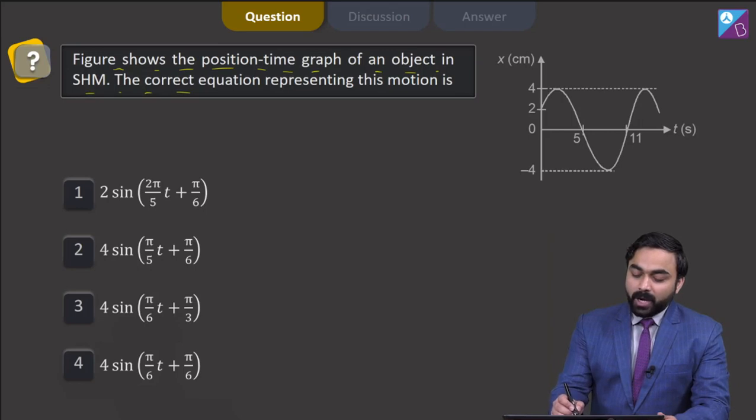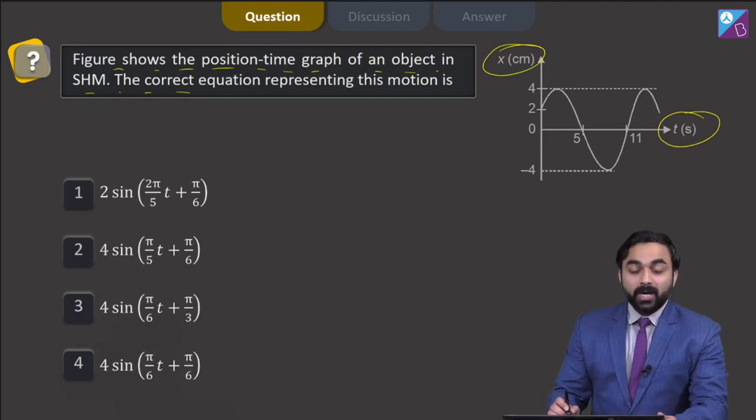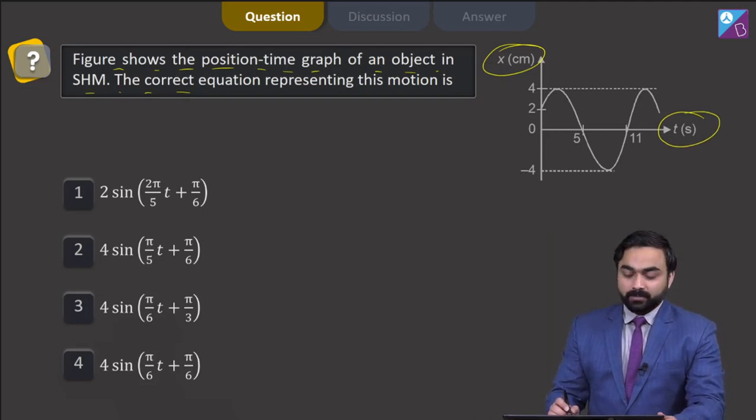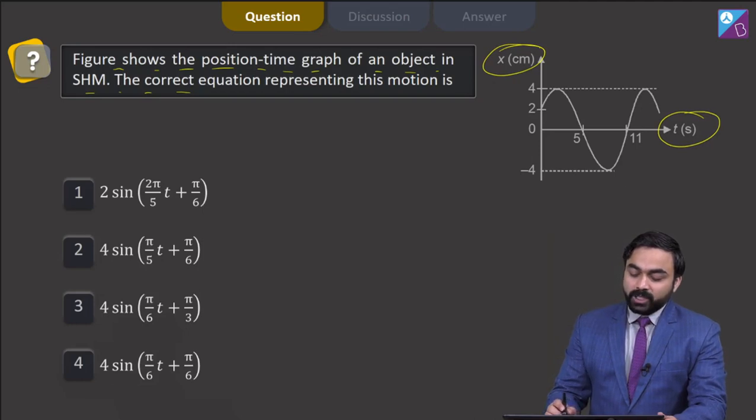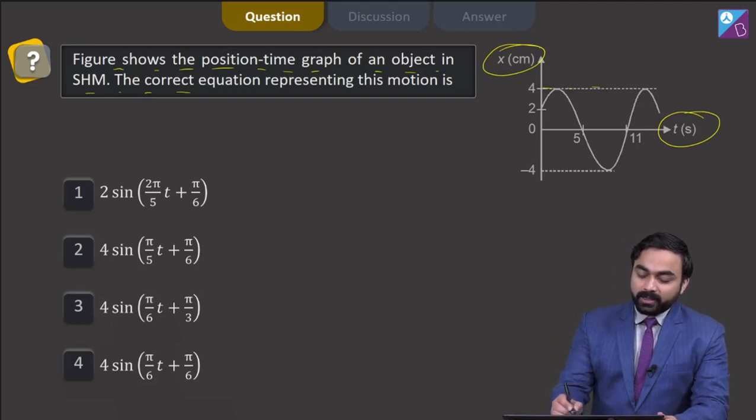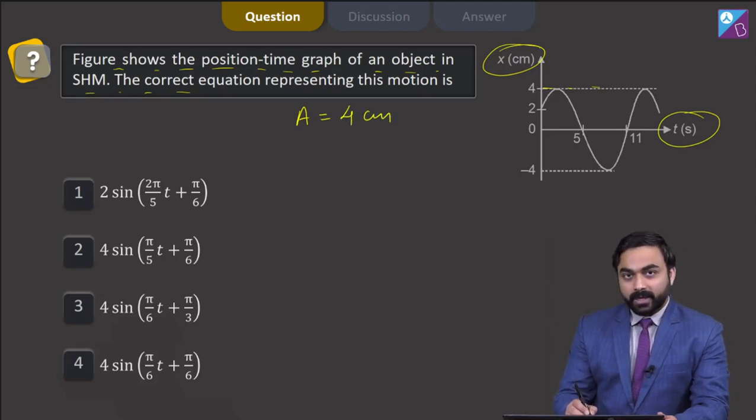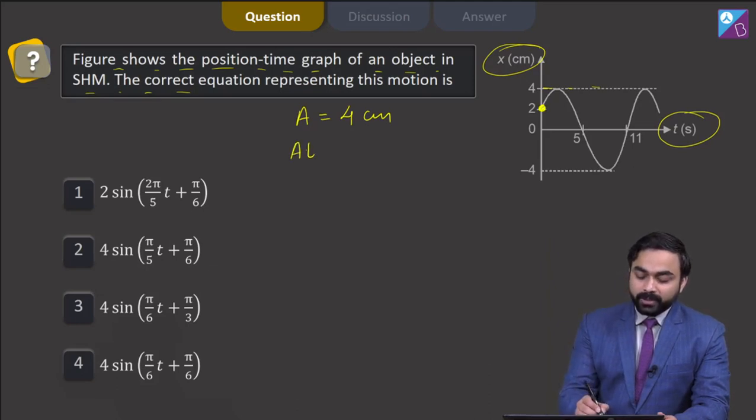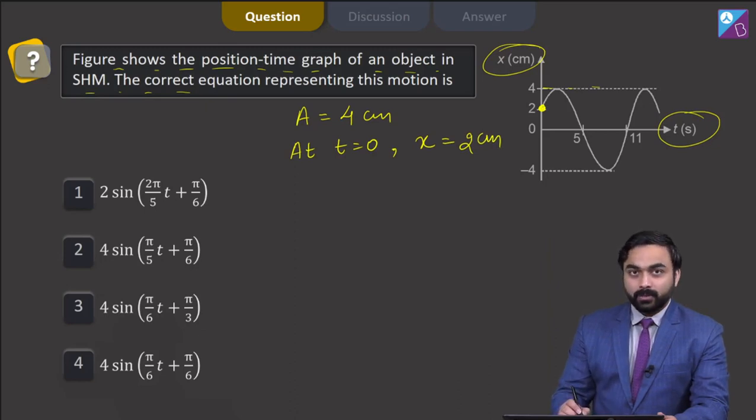I have been given a particle performing simple harmonic motion and this figure represents the position time graph for the particle performing SHM. If we look at this graph closely, we will find that the amplitude of this motion is 4 centimeter. Also, at t is equal to 0, the particle is at 2 centimeter.